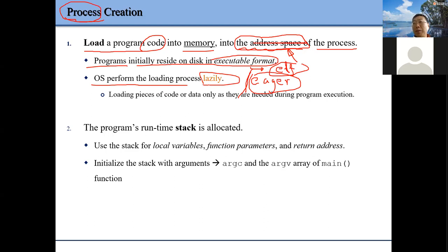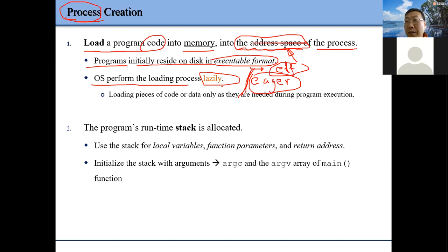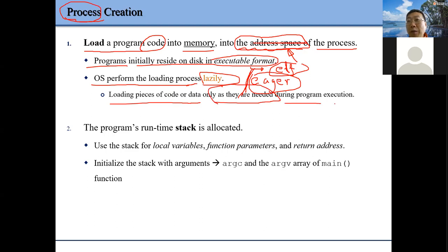We call this approach 'lazy.' The other is 'eager' — eager means when we create a process, we allocate all space for this process right away. Since our memory space is constrained, when we load code or data into memory we do it on-demand — during program execution, when we really need a part of memory, then we load that code and data and allocate the physical memory.